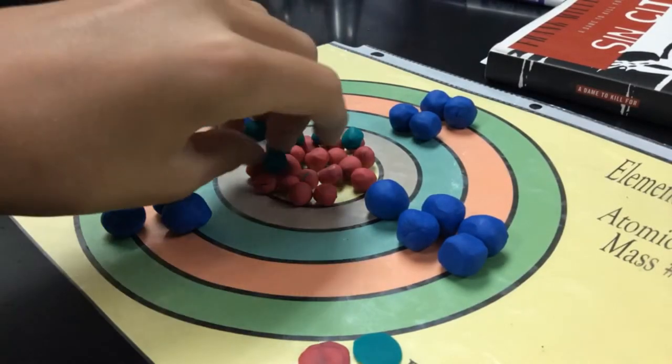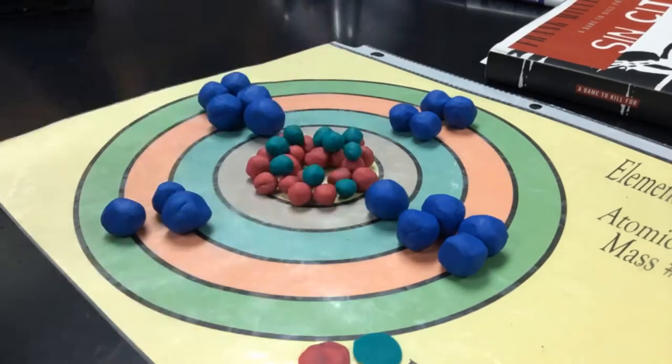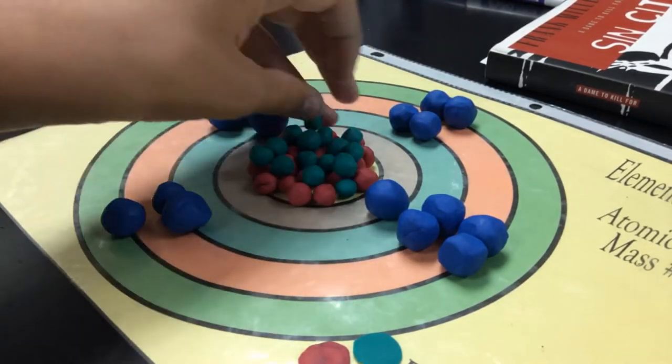In addition to 20 neutrons, chlorine-35 contains 17 protons, which are represented by green clay.